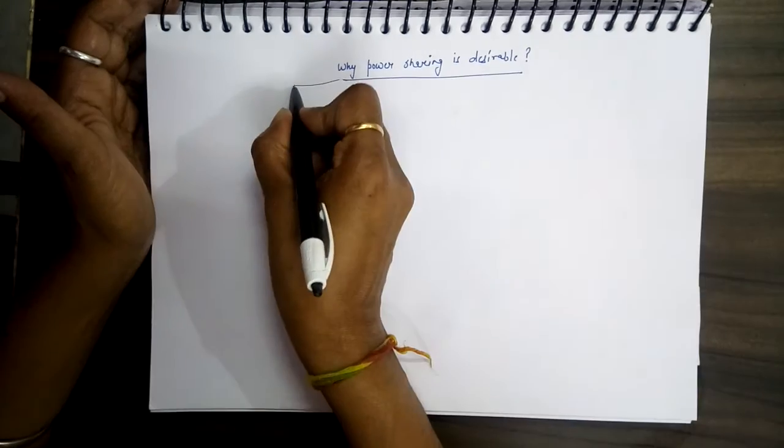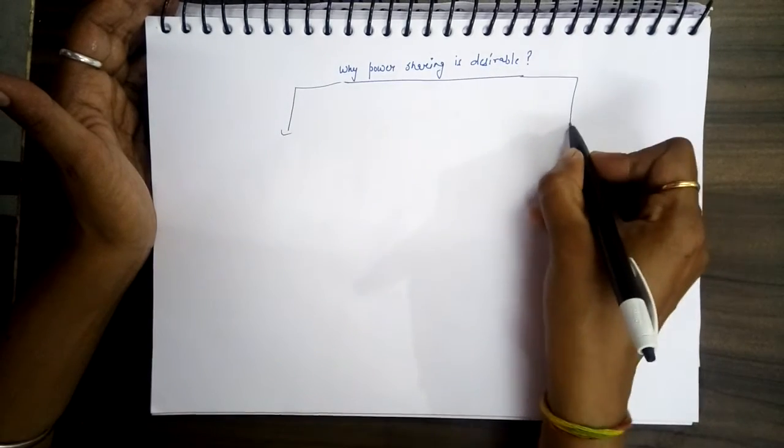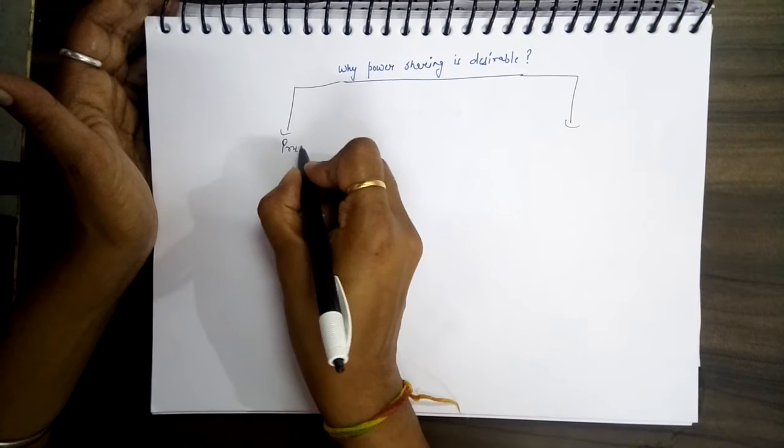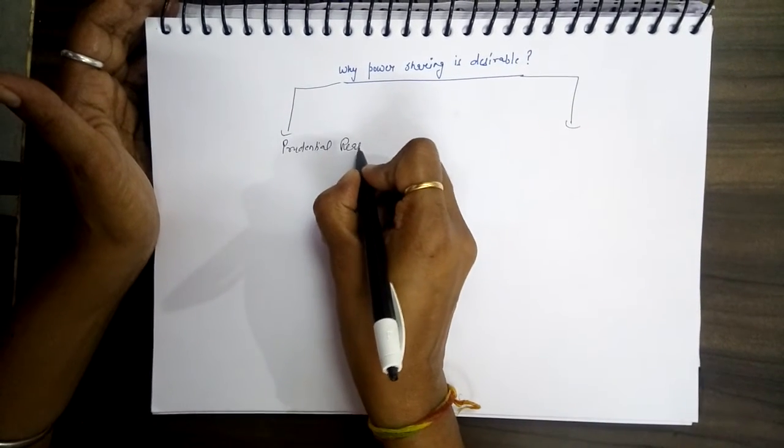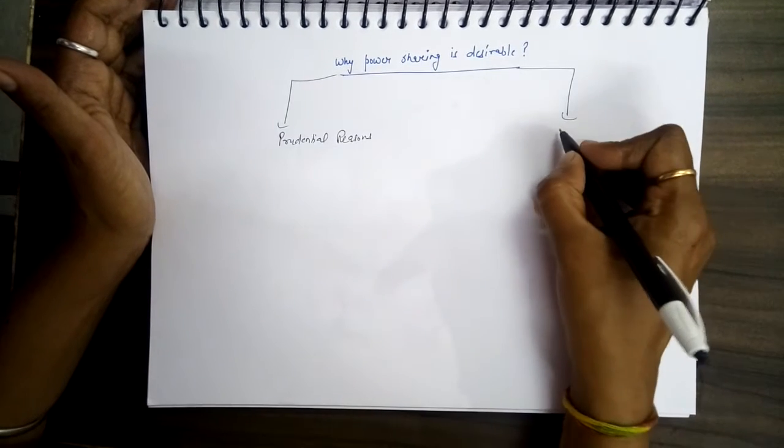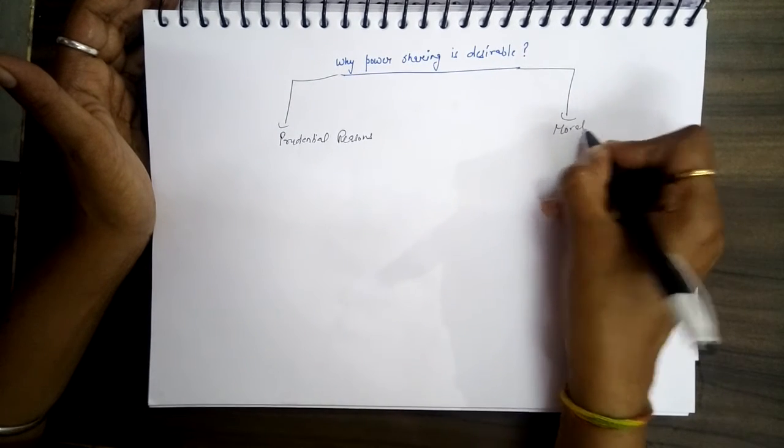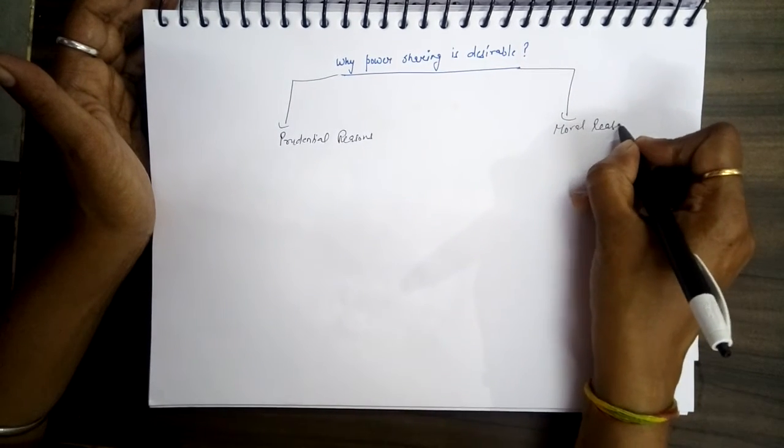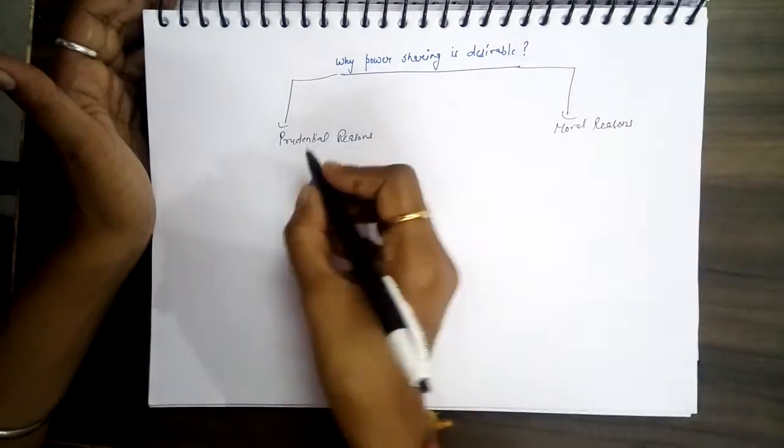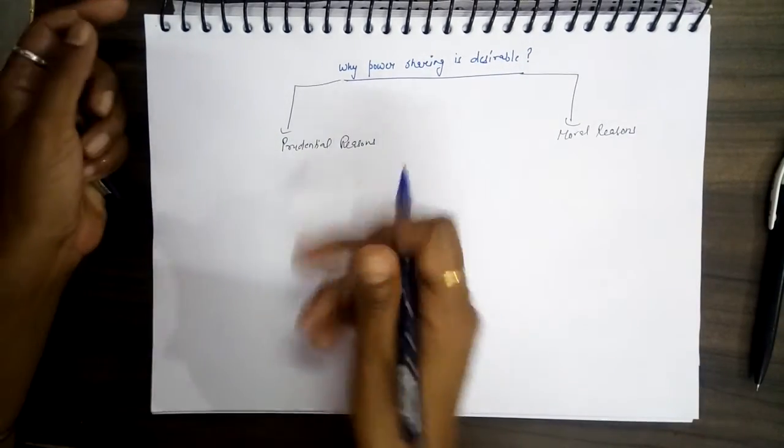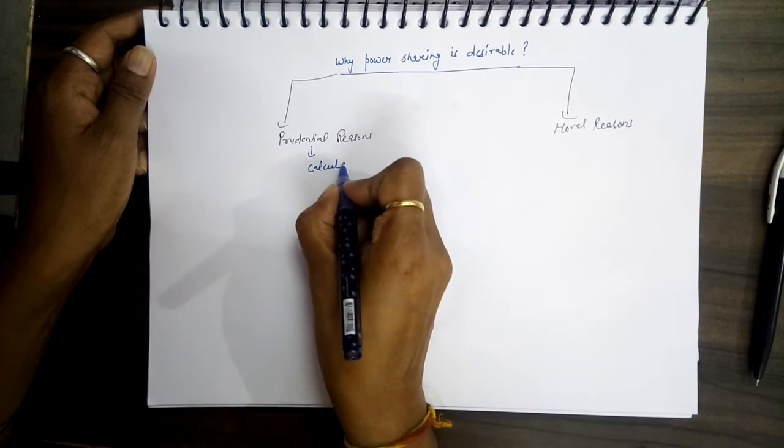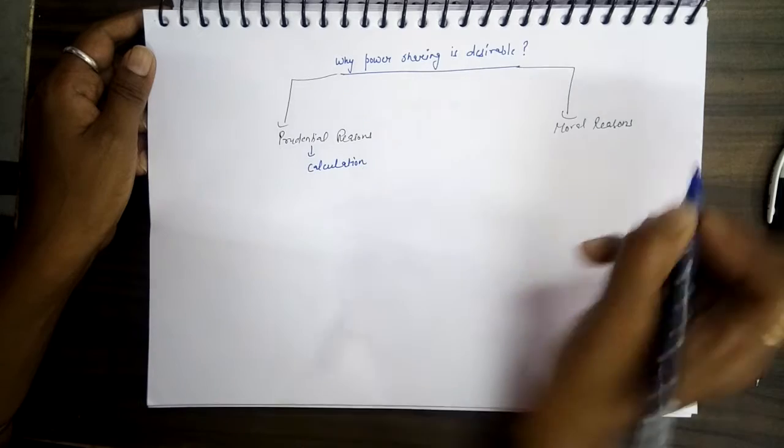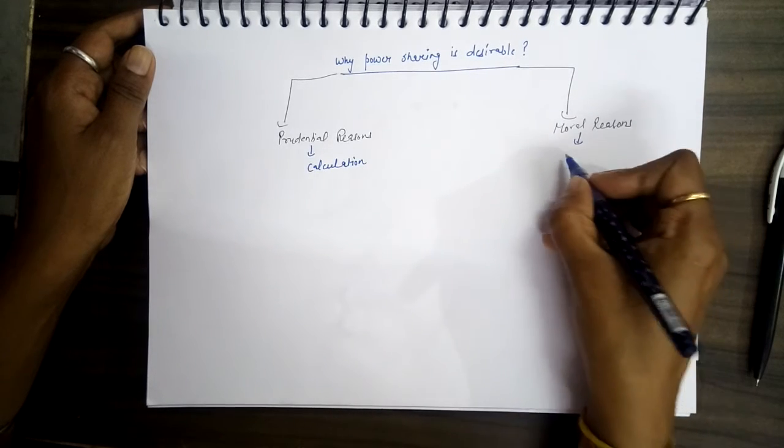One is based on prudential reasons, and the other is based on moral reasons. So what is prudential reason? Prudential means based on calculation, and moral means based on values.